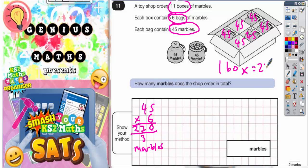One box has 270 marbles. Well, the toy shop doesn't just order one box. They order 11 boxes. So we want 11 lots of 270.